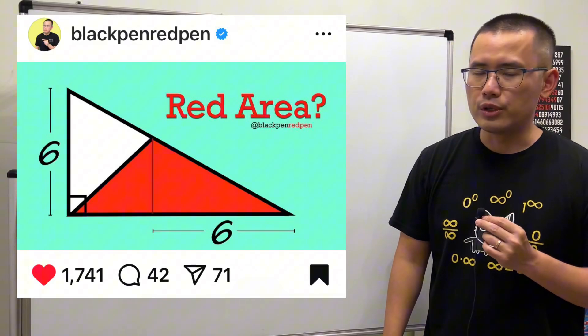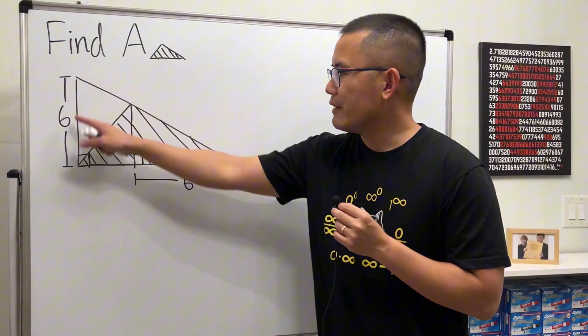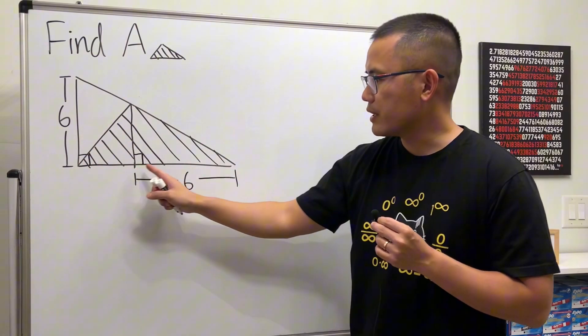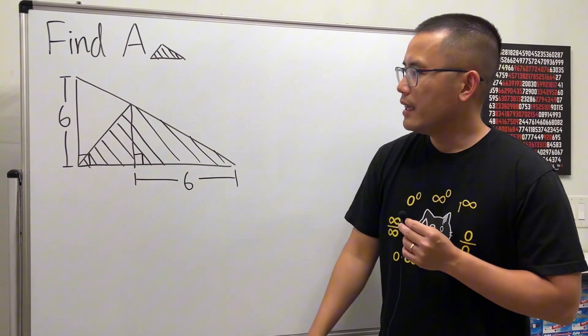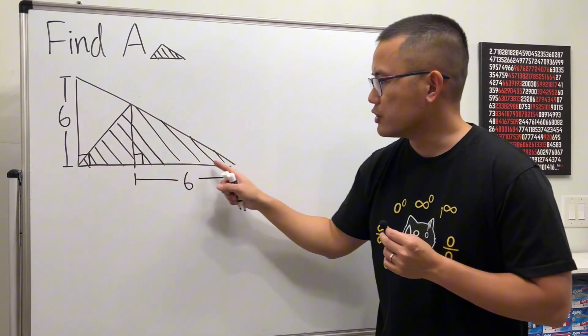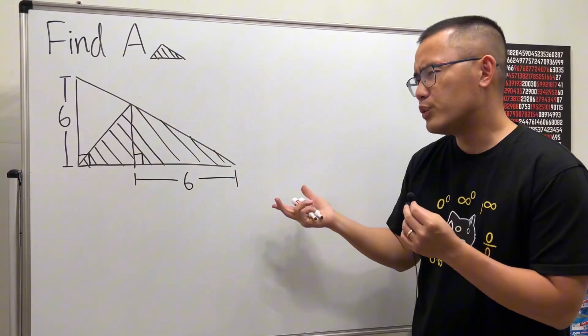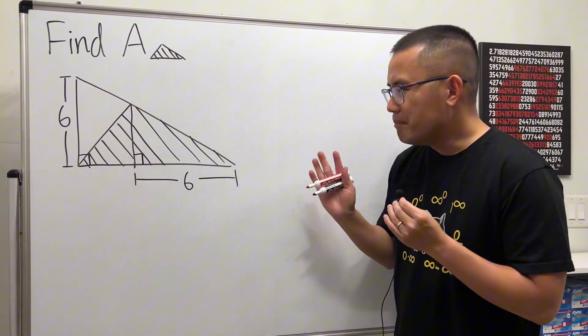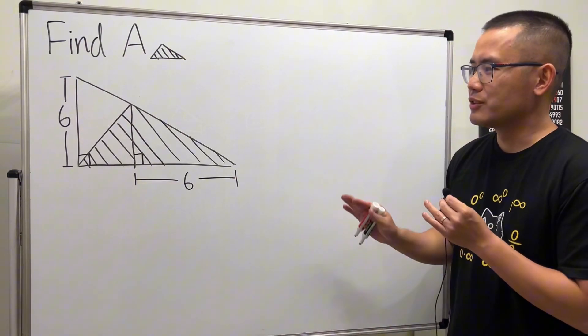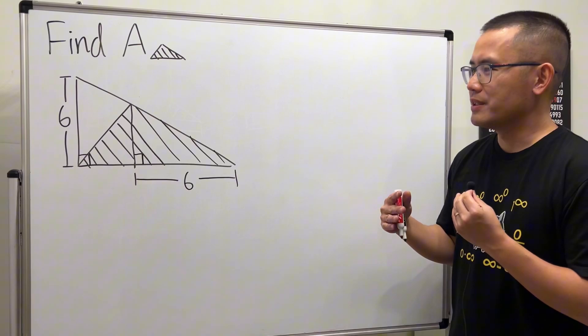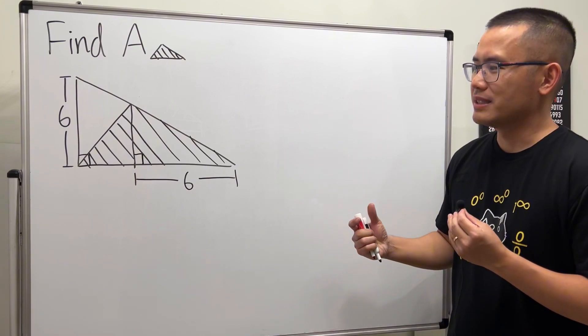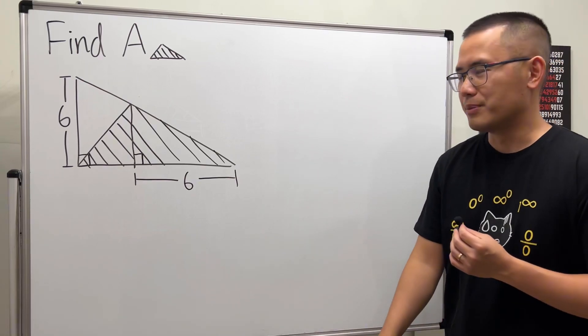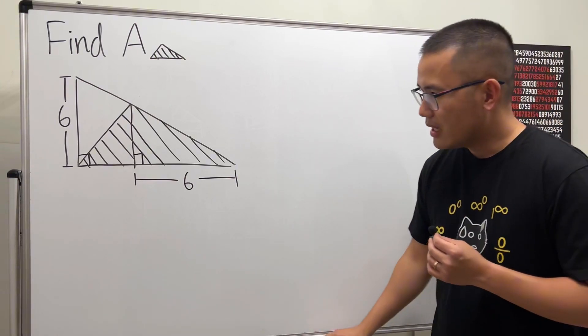So here's a solution to the triangle question from my Instagram. We have this right triangle and we know that from here to here is six and from here to here is also six, and we are going to find the area of this shaded triangle. Do we really have enough information? Yes. In many situations, a lot of geometry questions look impossible, but you have to play around with the picture a little bit. Here's the deal.